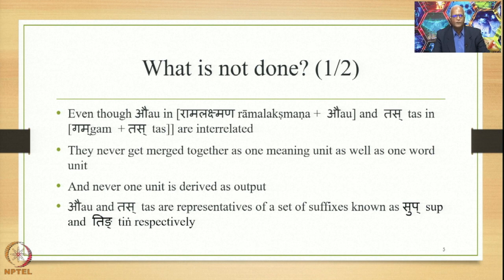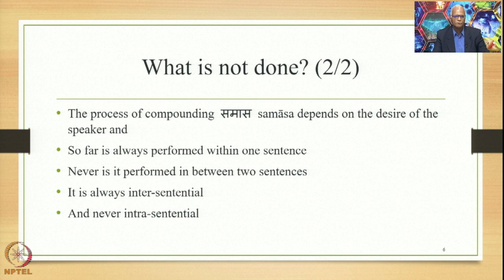Au and Tas are representatives of sets of suffixes known as sup and ting respectively. Au is part of sup suffixes and Tas is part of ting suffixes. It is to be remembered that the process of compounding or Samasa depends on the desire of the speaker and so far is always performed within one sentence.